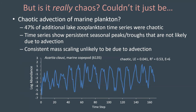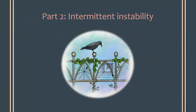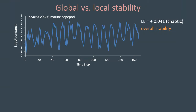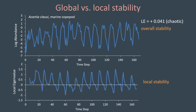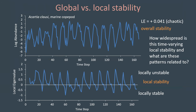Having hopefully convinced you that chaos is not rare, I'm going to move on to part two, which is a follow-up study on intermittent instability. We've been talking about Lyapunov exponents, which express stability and divergence across an entire time series. But we can also quantify whether the dynamics are diverging or converging at any particular point in time, as expressed by the eigenvalues of the local Jacobian matrix. So one thing we were curious about is how widespread this time-varying local stability is and what these patterns might be related to.